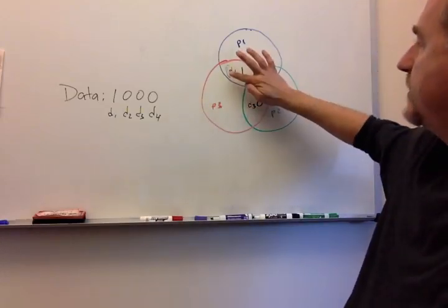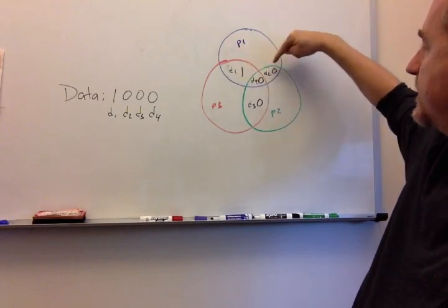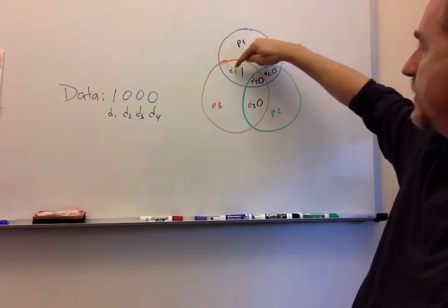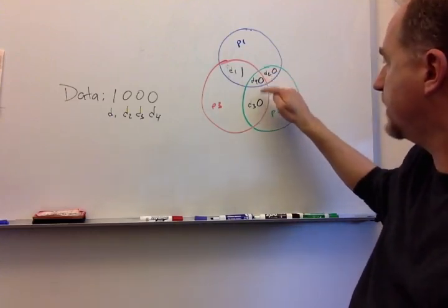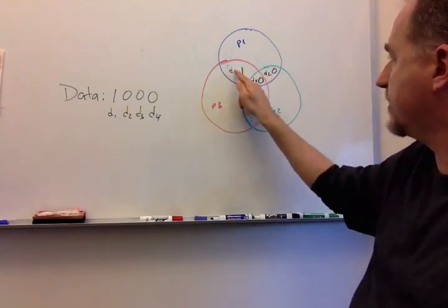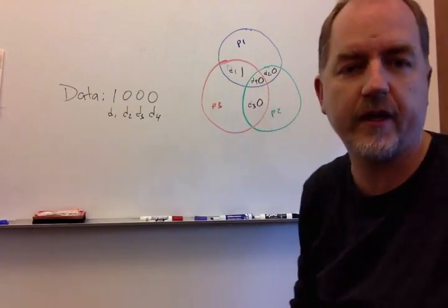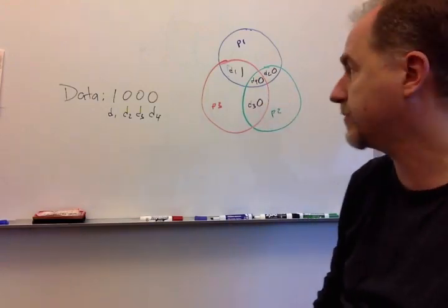Notice each parity bit is going to only look at the data bits inside its circle. So parity bit one is going to look at these three data bits. Parity bit two is going to look at these three data bits. And parity bit three is going to look at these three data bits. They don't all look at all the data bits, but they all look at multiple ones, three of them each.